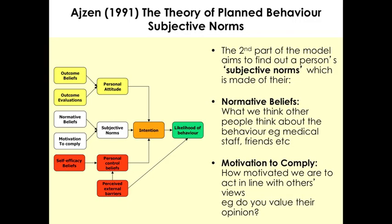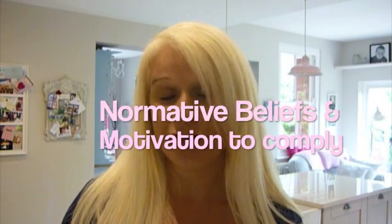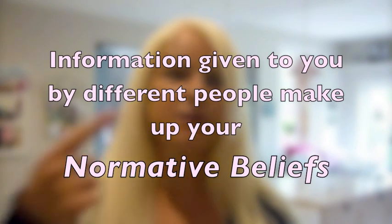The next section, the white section, is about finding out somebody's subjective norms. Subjective means your own opinion — objective is based on fact, subjective is your personal opinion. So subjective norms means your personal opinion about what is normal for you. It's made up of normative beliefs and motivation to comply. Normative beliefs are simply all the things you are told by different people — a school teacher might say smoking's bad, friends might say smoking's really cool. The government might put up a poster saying quit smoking because it causes lung damage. All of those are normative beliefs.